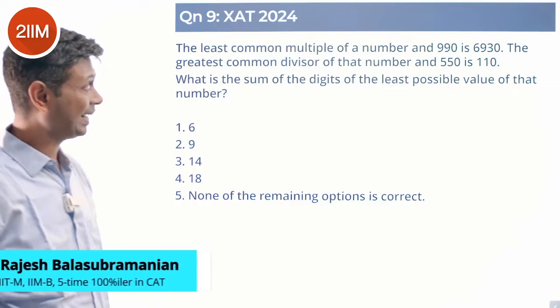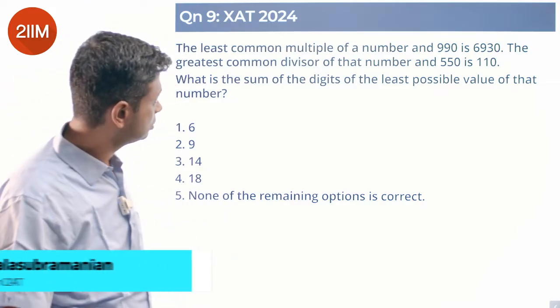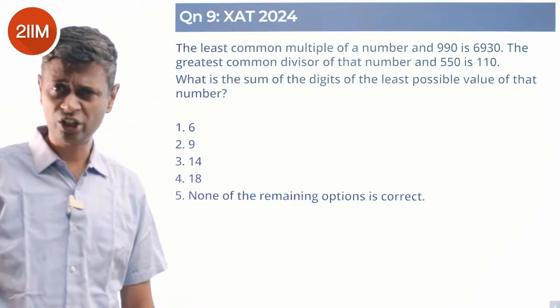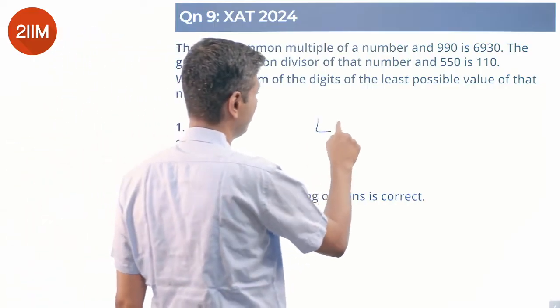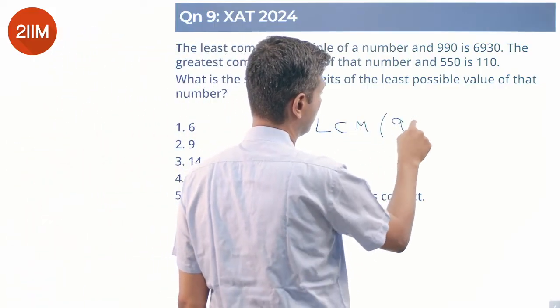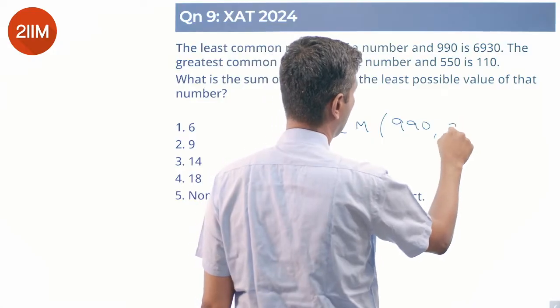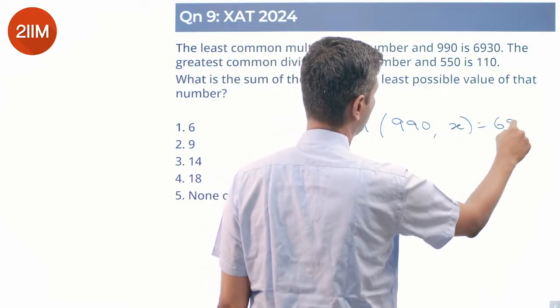The least common multiple of a number and 990 is 6930. So LCM(990, X) = 6930.